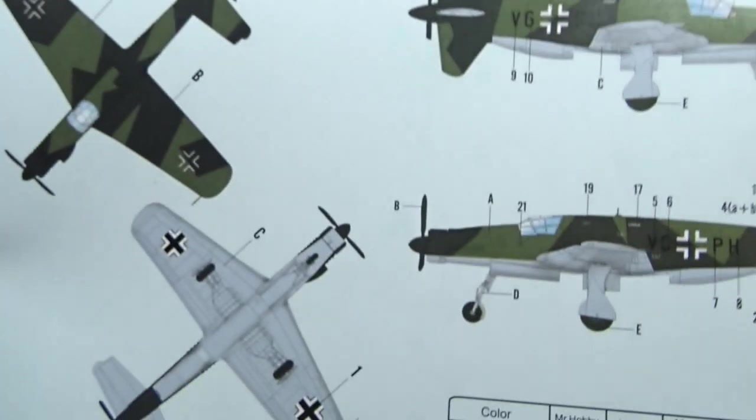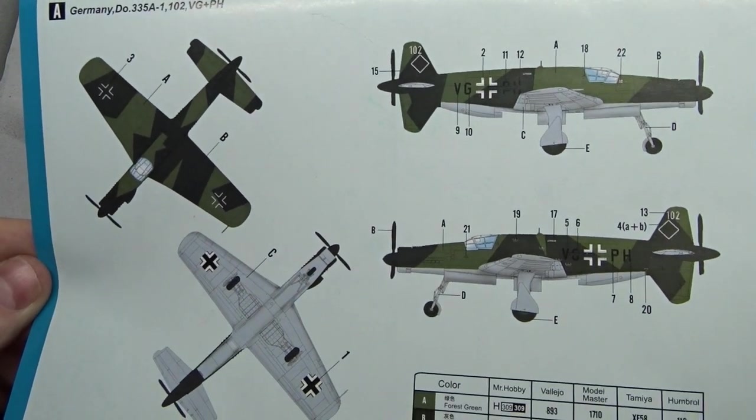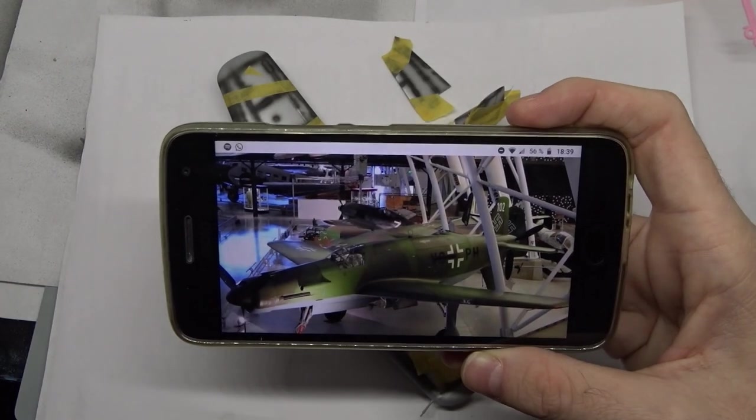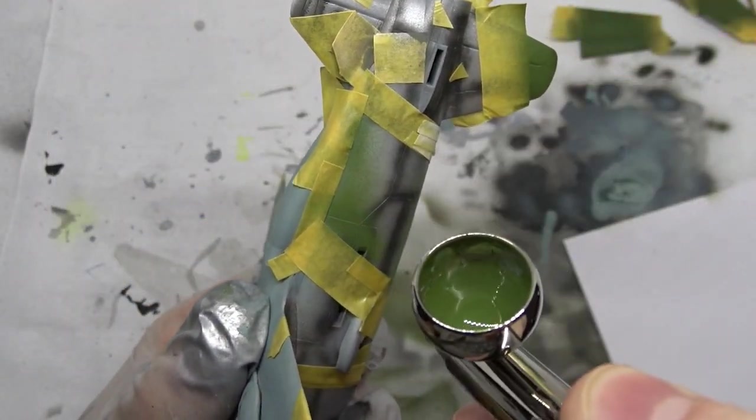Up next I masked the camo scheme on the upper side. Unfortunately the manual had a few inaccuracies, so I mostly relied on photos of the real aircraft. I sprayed on a few layers of RLM 82.